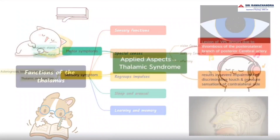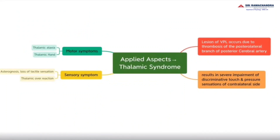Regarding applied aspects: a lesion of the VPL occurs due to thrombosis of the posterolateral branch of the posterior cerebral artery. This results in severe impairment of discriminative touch and pressure sensations on the contralateral side. Sensory symptoms like astereognosis and loss of tactile sensations also occur. Lesions to the posterior lateral nucleus, which relays cerebellar impulses to the excitomotor cortex areas 4 and 6, cause profound muscle weakness, decreased muscle tone, and ataxia.